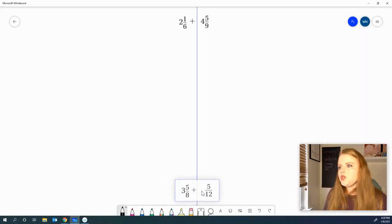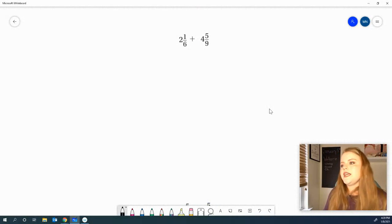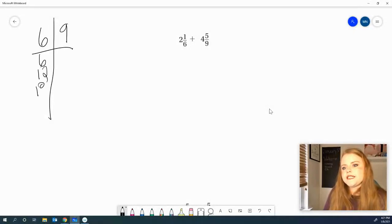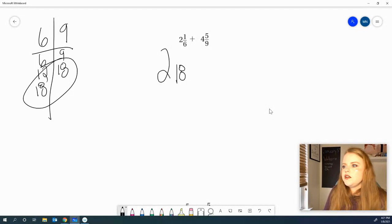We've got 2 and 1 sixths plus 4 and 5 ninths. Go ahead and work it out. So, for this one, I am going to make our T-chart. Mostly because I want you to have lots of practice making those. 6, 12, 18, 9, 18. 18 is going to be our least common multiple, so our common denominator. 2 and something over 18. I multiply my 6 times 3 to get me to 18th, so I multiply my 1 times 3 as well. 3 eighteenths plus 4 and something over 18.